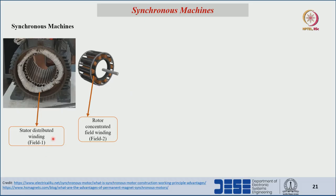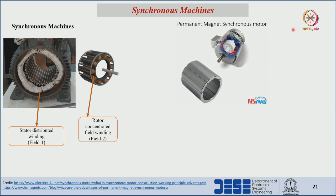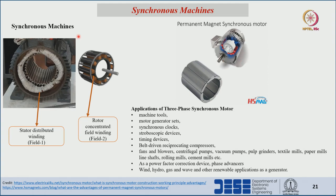Based on the attractions and repulsions of the fields created by stator and rotor windings, the synchronous motor works. For the permanent magnet synchronous motor, the rotor side has permanent magnets and the stator side has normal distributed winding. Applications of permanent magnet motors include machine tools, motor generator sets, electric vehicles, timing devices, belt-driven reciprocating compressors, lifts, rolling mills, cement mills, power factor correction devices, and renewable energy systems.